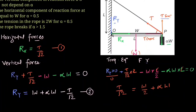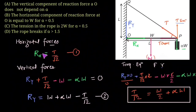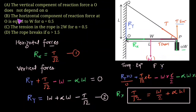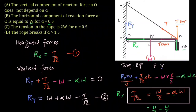Now substituting T into the equations. Since T/√2 = W/2 + alpha·W, and Rx = T/√2, we have Rx = W/2 + alpha·W. Option B states that the horizontal component of the reaction at O equals W when alpha = 0.5. Putting alpha = 0.5: Rx = W/2 + 0.5W = W. So Option B is correct.